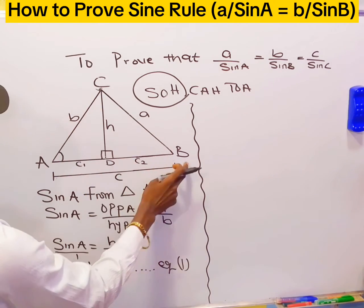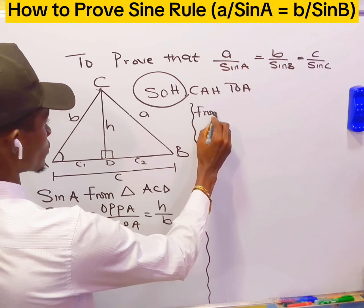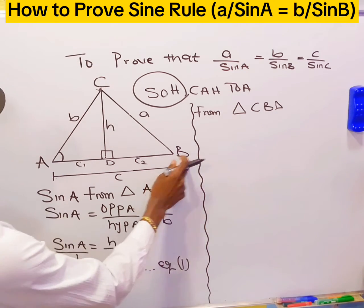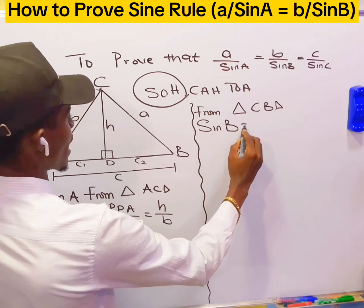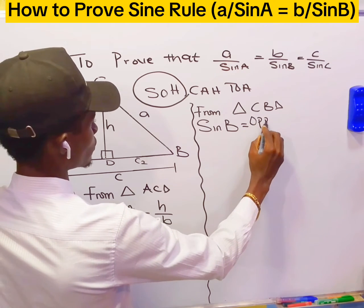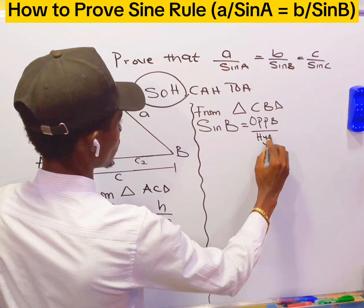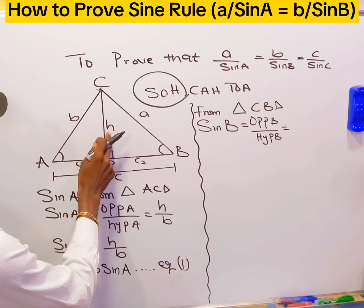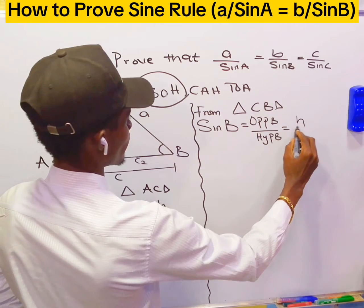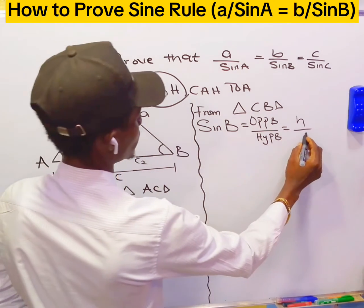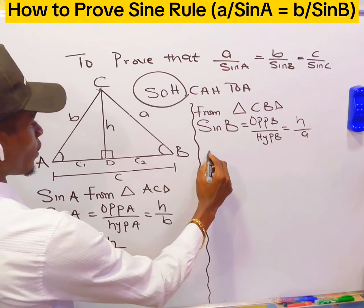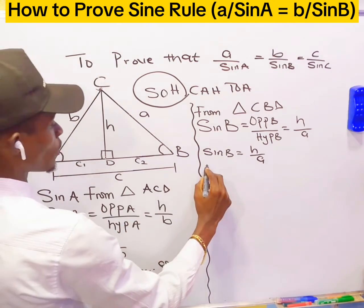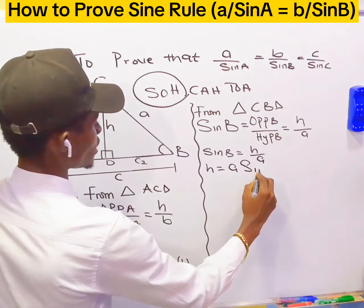Also, from triangle CBD, let's find sin B. Sin B equals opposite over hypotenuse — the opposite side here is the altitude H, and the hypotenuse is a. Therefore, sin B equals H over a. Making H the subject, we have H equal to a·sin B.